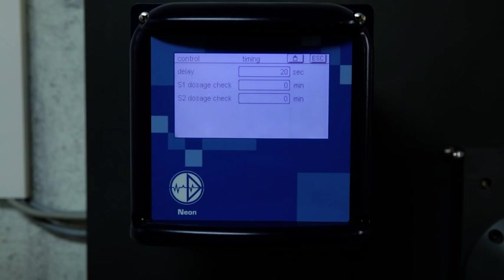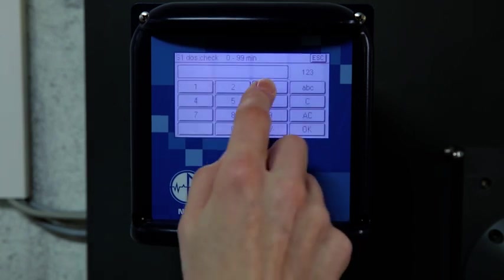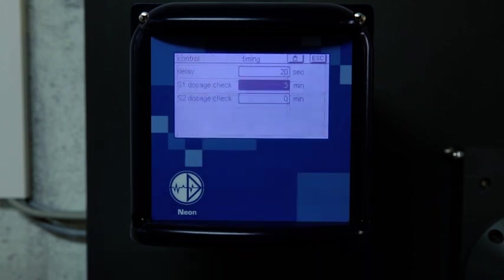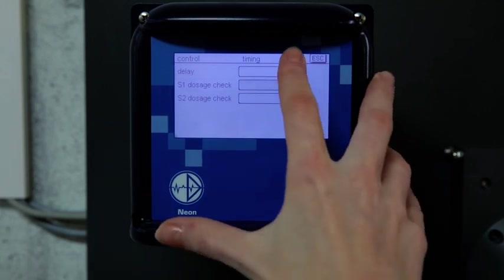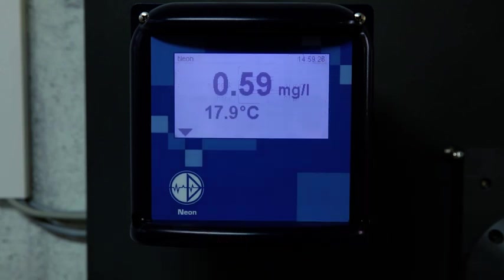Each controller variable has a dosage check function. If 100% dosing continues longer than the set time, the alarm is triggered and the controller stopped. This is to prevent dangerous chemicals from being released if injection pipes are broken.